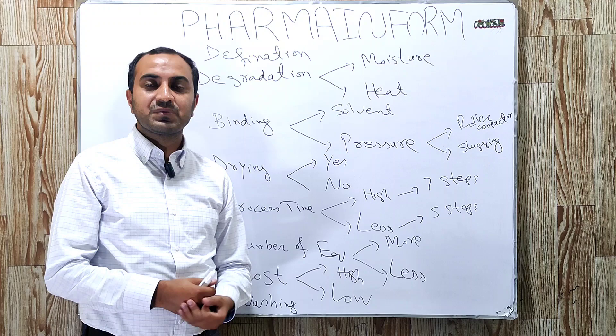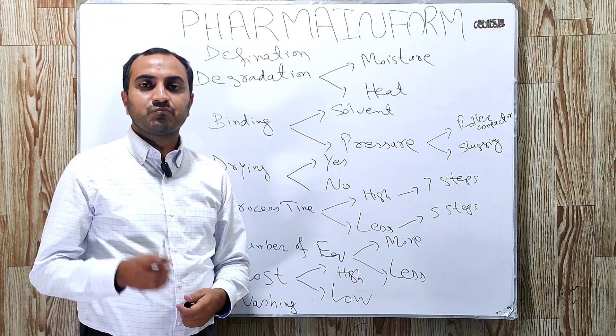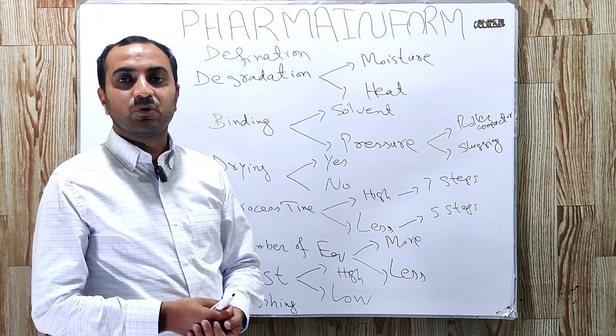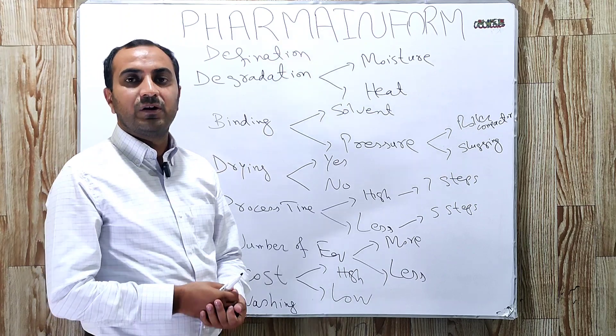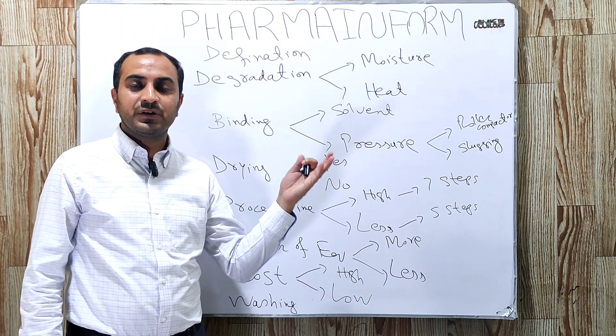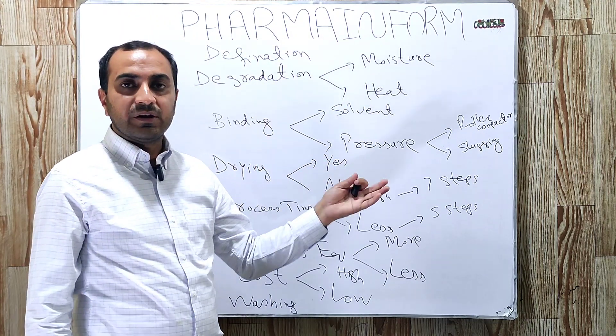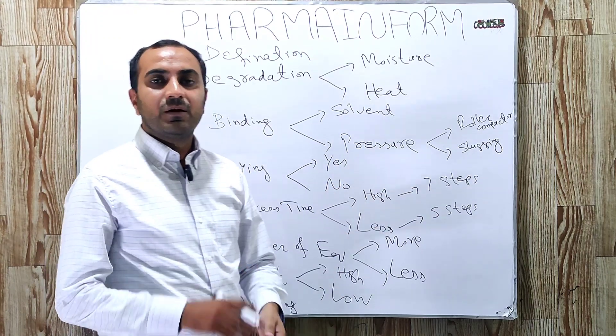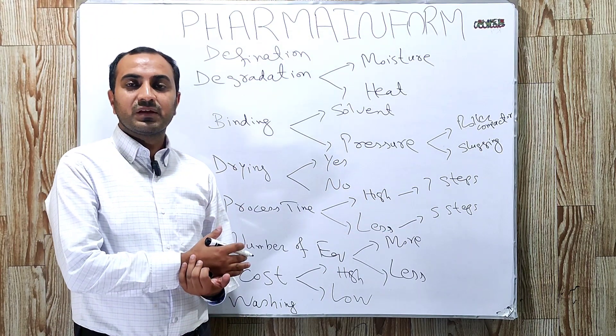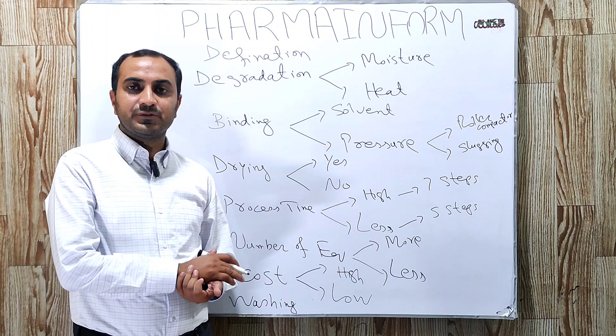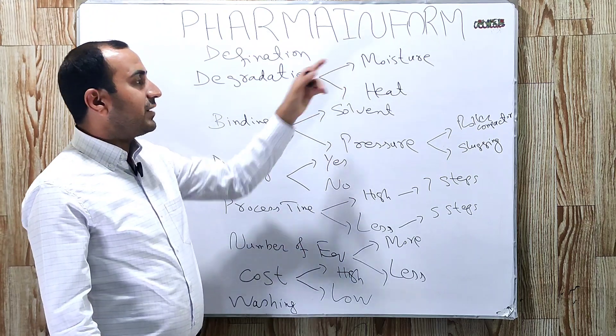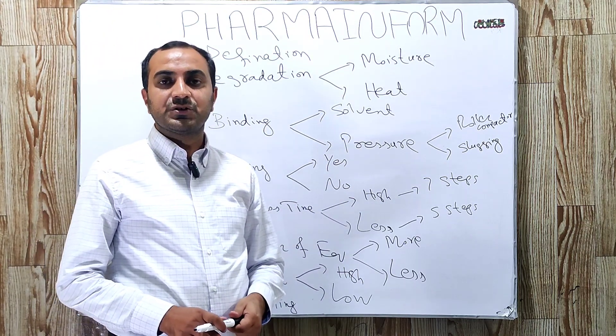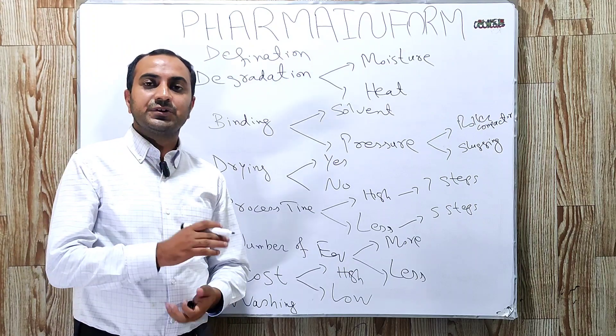What is wet granulation? Wet granulation is a process in which we convert fine powders into agglomerates or granules by using solvent or binder solution. What is dry granulation? In dry granulation, we convert fine powders into granules by application of pressure.